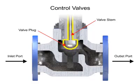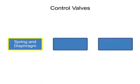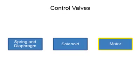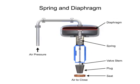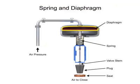Three actuator types are used in control valves and they include spring and diaphragm, solenoid, and motor. As the name suggests, the spring and diaphragm actuator uses a spring and a diaphragm to move the valve stem and plug.